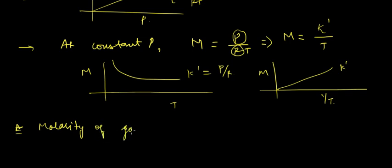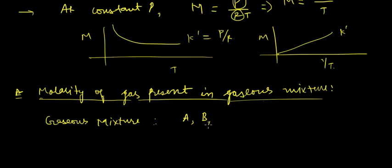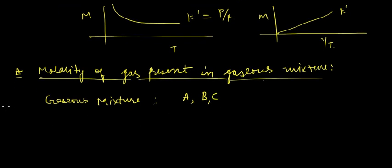So what would be the molarity of gas present in gaseous mixture? For gaseous mixture, let's suppose we have A, B, and C. Molarity of A would be number of moles of A present in the mixture divided by volume of mixture.